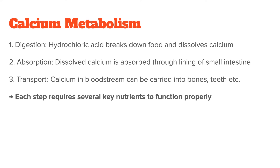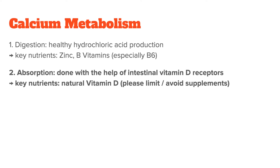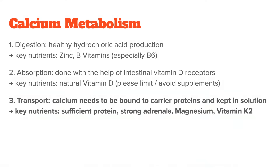For calcium digestion, you need healthy hydrochloric acid production, and important nutrients here are zinc and B vitamins, especially B6. For calcium absorption, it is absorbed through the lining of the small intestine with the help of intestinal vitamin D receptors, so an important nutrient here is natural vitamin D — though please limit or avoid supplements. And for calcium transport and utilization, it needs to be bound to carrier proteins and kept in solution, requiring sufficient protein intake, strong adrenals, magnesium, and vitamin K2.